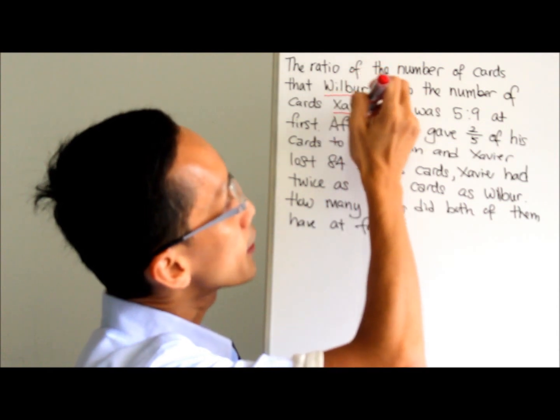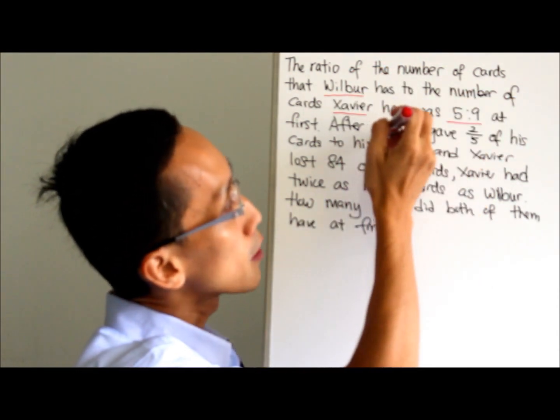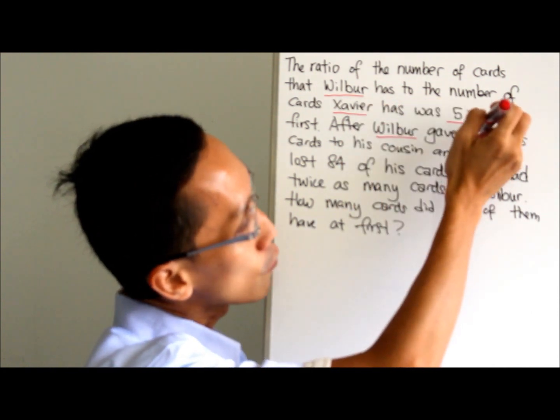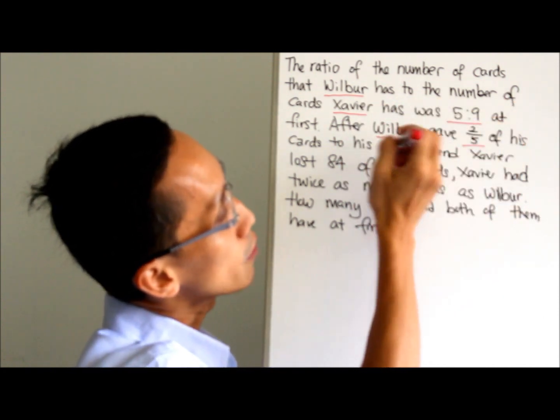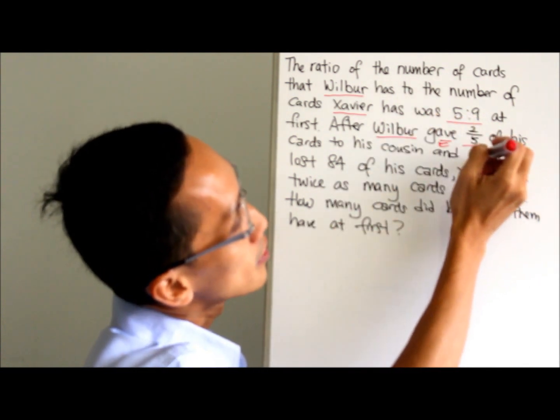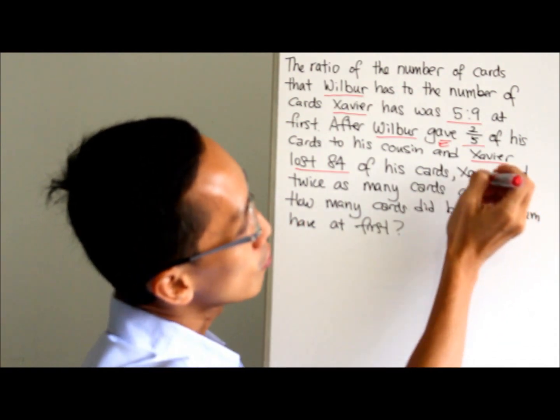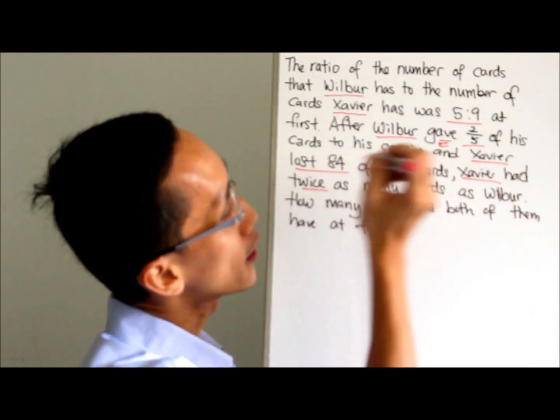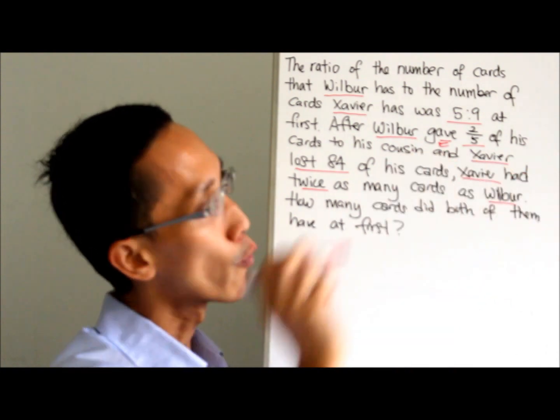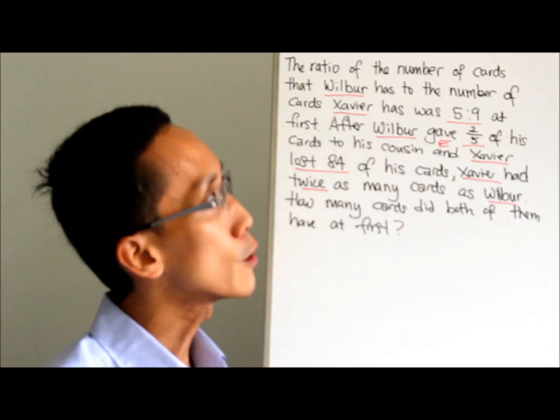Wilbur, Xavier, five is to nine. So Wilbur gave two-fifths to Xavier. Xavier has lost 84. Xavier will have twice as many cards as Wilbur. Simple. So these are the keywords.